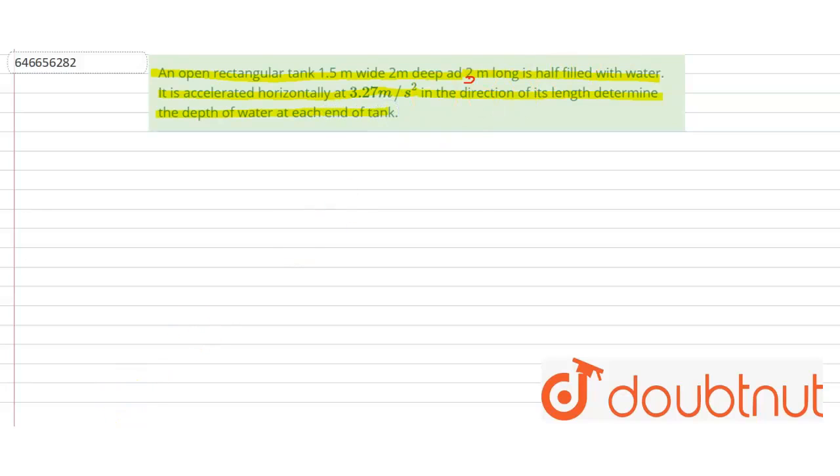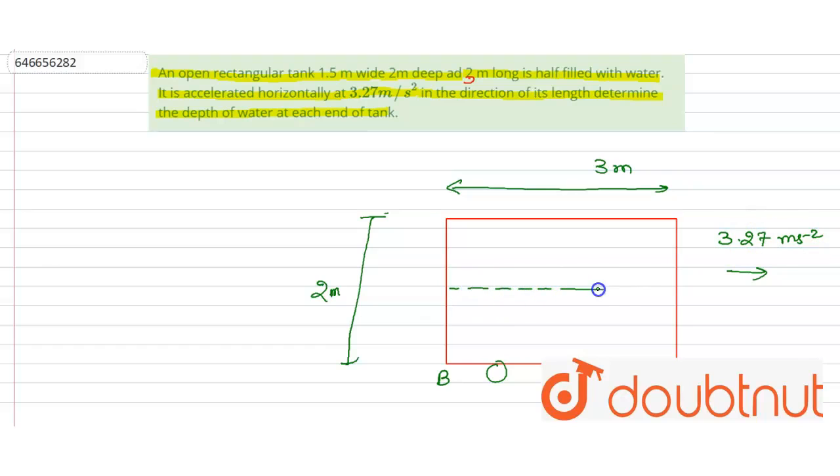So first of all, make the figure. Suppose this is the tank and this is given 3 meter, height is given 2 meter, and suppose this point is B, this point is A. This is the tank which is accelerated with acceleration 3.27 meter per second square in this direction, and water is filled half of the tank, that means 1 meter.